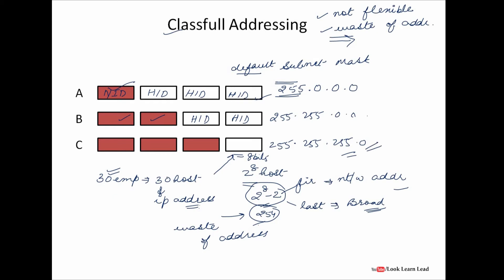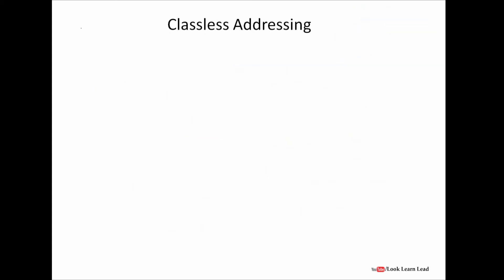We cannot increase the number of hosts in Class C or decrease the number of hosts in Class B — you have to take the whole set of addresses. This is classful addressing. To remove this limitation, we have classless addressing, also known as CIDR — Classless Inter-Domain Routing.